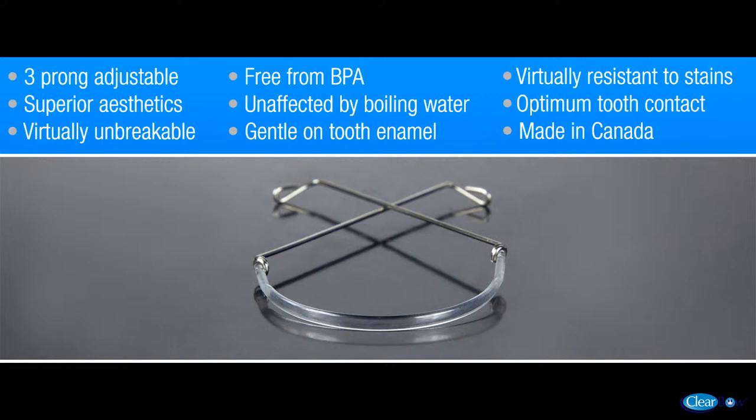The clear bow is the only aesthetic labial bow that can be adjusted with pliers for minor tooth movement without fear of breakage. This video will demonstrate a clear bow that is adjusted with three-pronged pliers to simulate tooth movement on a dental cast.